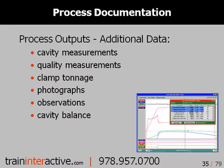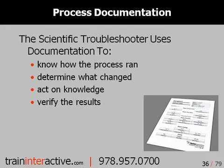Every molder and process has specific information recorded — for example, things like cavity measurements, quality measurements, clamp tonnage, photographs, any observations, and how the cavities are balanced. To reiterate, the scientific troubleshooter uses documentation to know how the process ran, determine exactly what changed, act on knowledge, and verify the results.